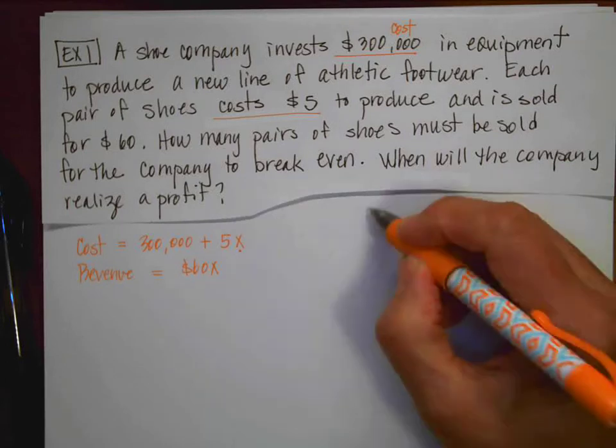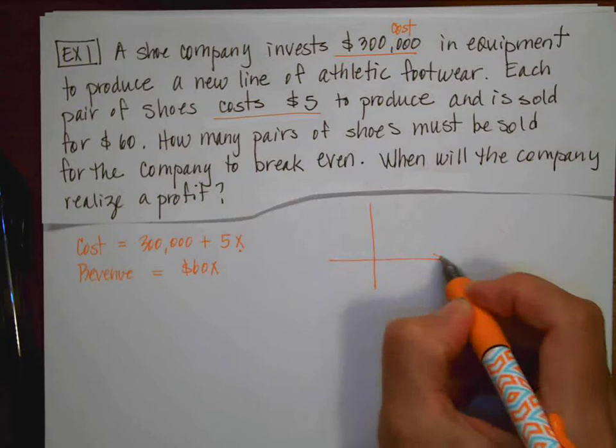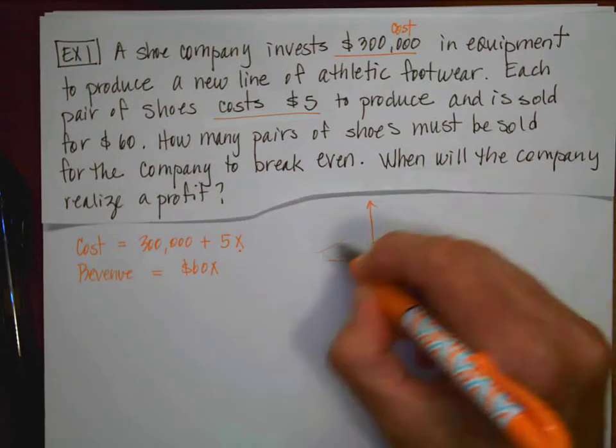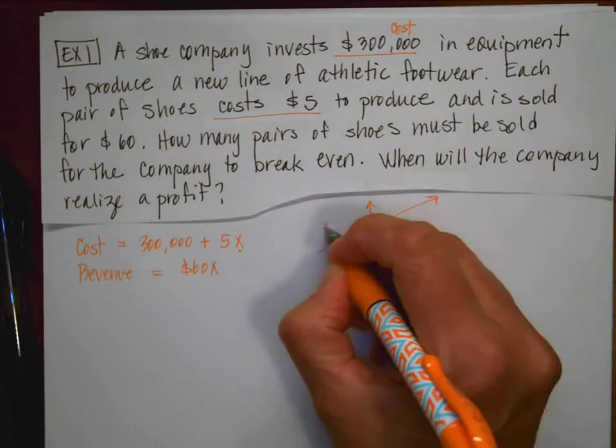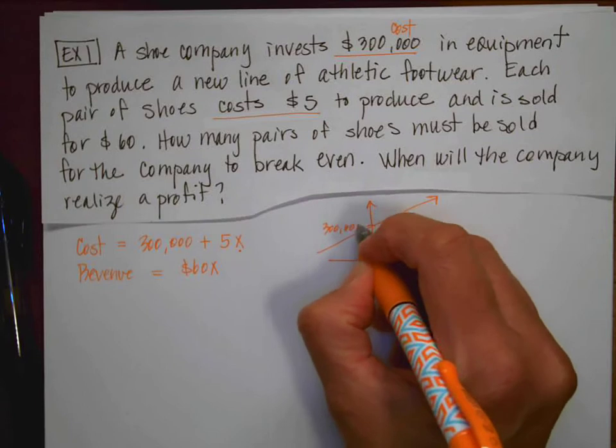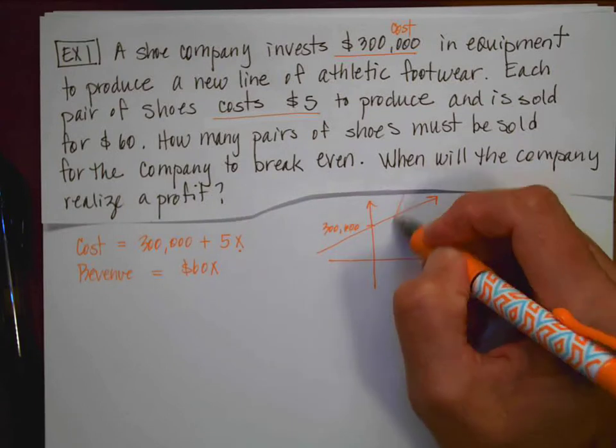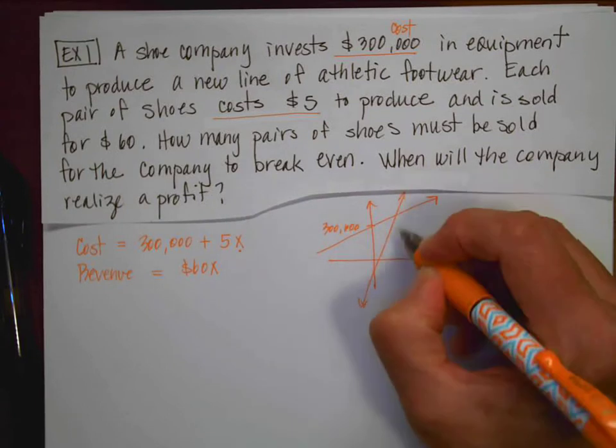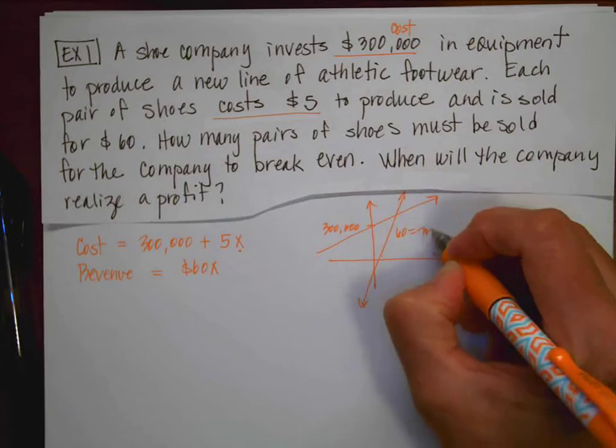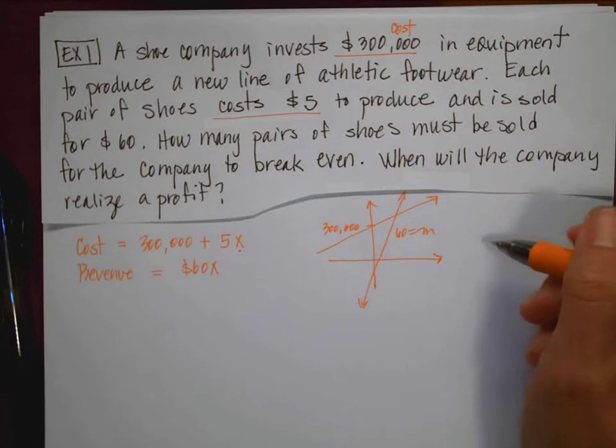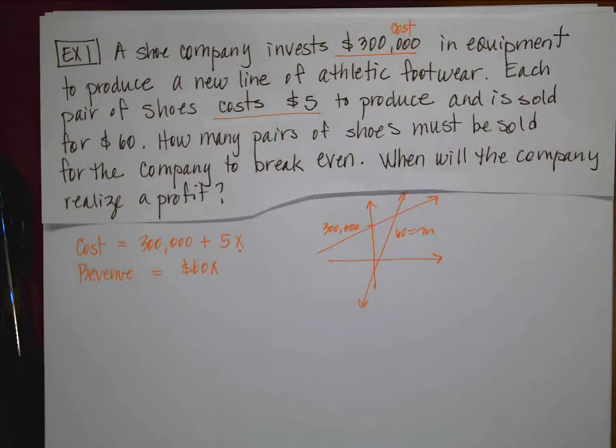My revenue is going to equal $60 for every pair of shoes that I sell. So then we could do this in our grapher, but the problem with these in your grapher is it kind of messes up the window. Because if you'll notice, the y-intercept on this guy is $300,000.